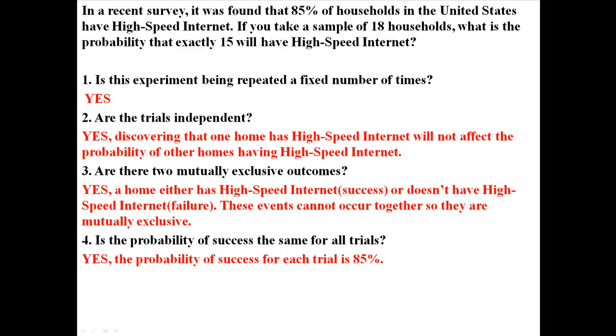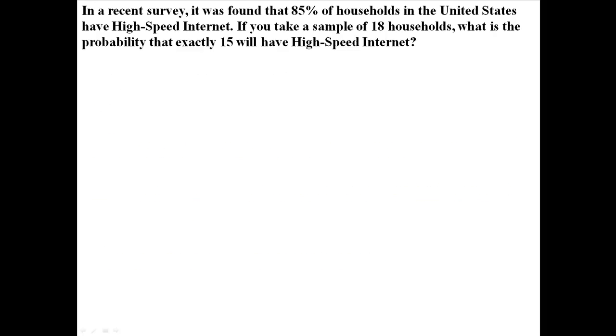And is the probability of success the same for all trials? Yes, for every trial, the probability of success, in this case the probability of having high-speed internet, is 85%. So let me remove this, and I'm going to show you the formula for calculating the binomial probability. In this case, this is kind of confusing.